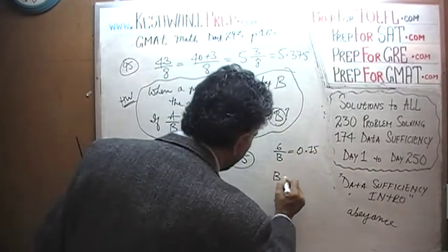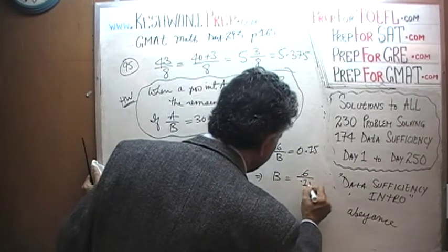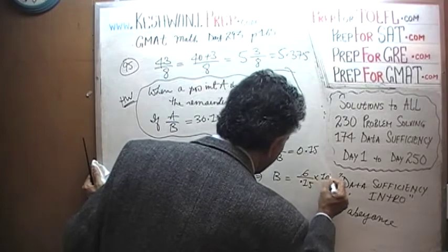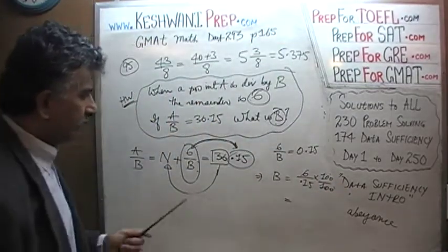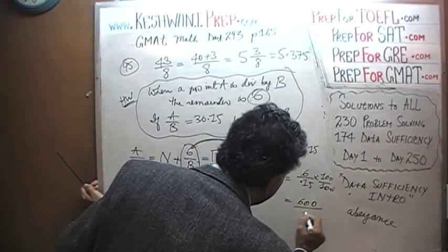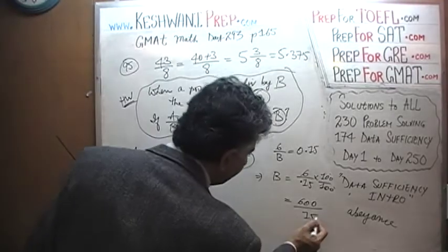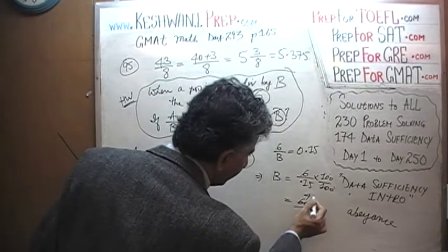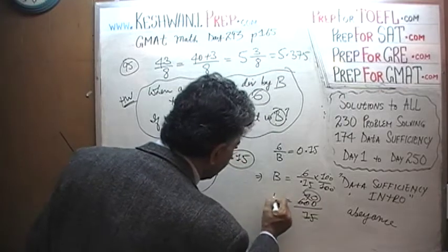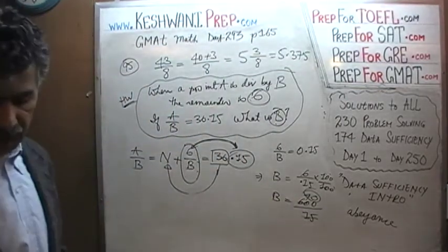So that tells us that 6 over b equals 0.15. And we are done. b equals, that implies that b equals 6 over 0.15. If we multiply top and bottom by 100, we get 600 over 15. And that's all. And how many 15 in 60? 60 has 4 fifteens. And then it's 0. So it's 40. b equals 40. That's it. We are done. b equals 40. That was the end of it.